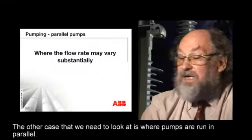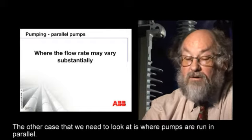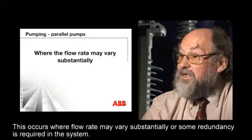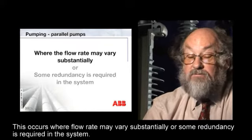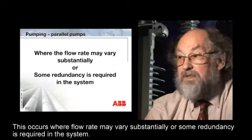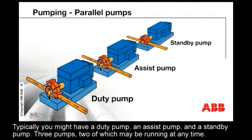The other case that we need to look at is where pumps are running in parallel. This occurs where flow rate may vary substantially or some redundancy is required in the system. Typically, you might have a duty pump, an assist pump, and a standby pump — three pumps, two of which may be running at any time.